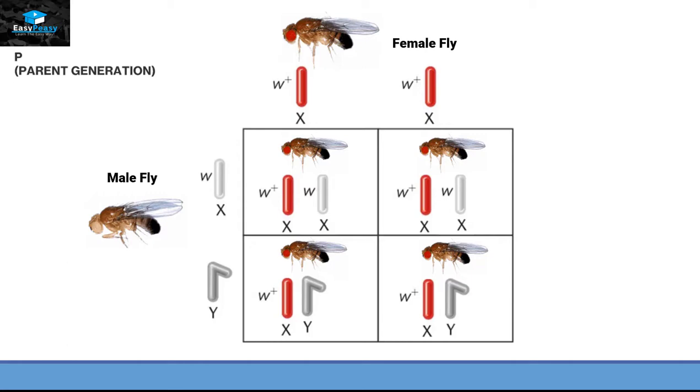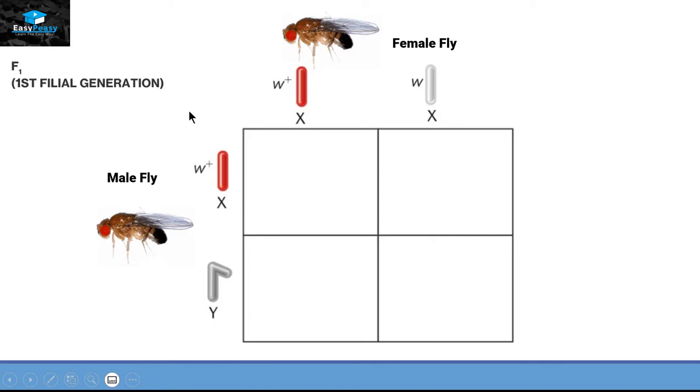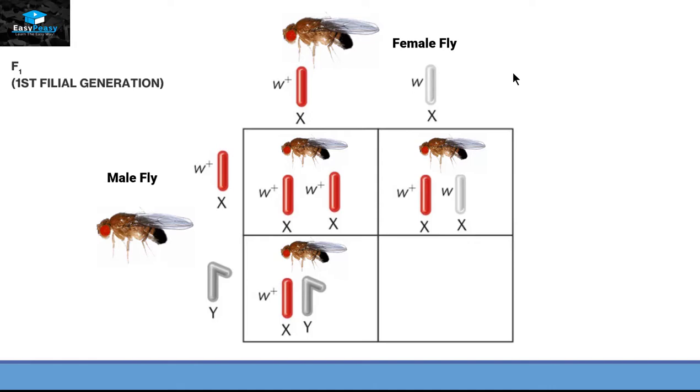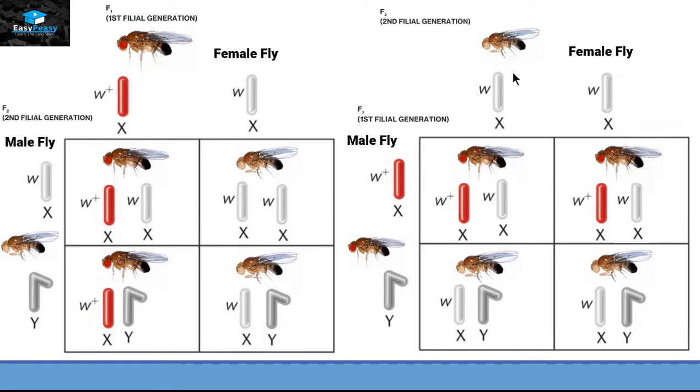Then he cross-fertilized first filial generation with each other. As we know now that first filial generation is a heterozygous organism. So in the red-eyed female fly, we will have one X chromosome with W+ and one X chromosome with just W. By this way, we can see that we have three fruit flies having red eye color and one fruit fly has white eye color.